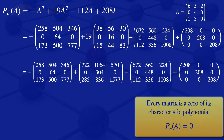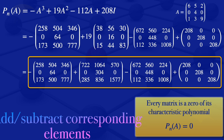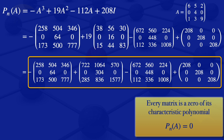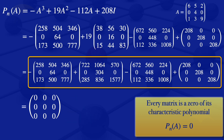Now we can combine these four matrices. For matrix addition and subtraction, we add or subtract the corresponding elements. When we add and subtract the corresponding elements of those four matrices, what we get is a 3 by 3 matrix whose elements are all zeros — the zero matrix. So we have shown that P(A) equals the zero matrix, meaning the given matrix is a zero of its characteristic polynomial. We have therefore verified the Cayley-Hamilton theorem for the matrix A.